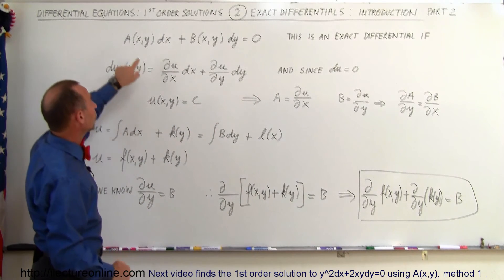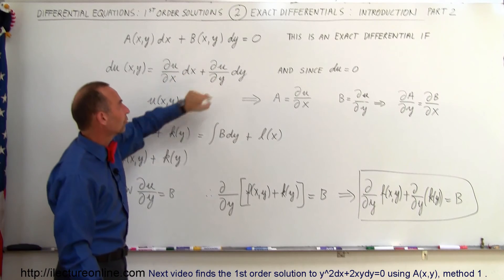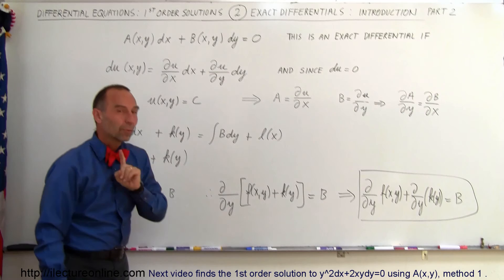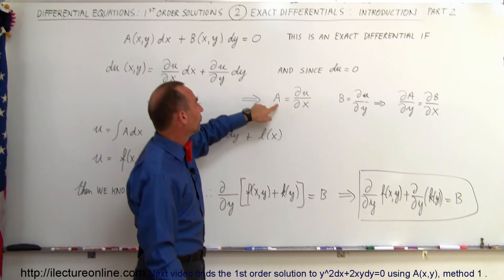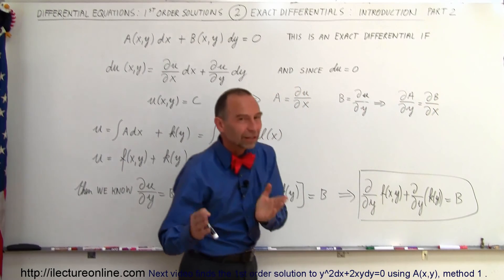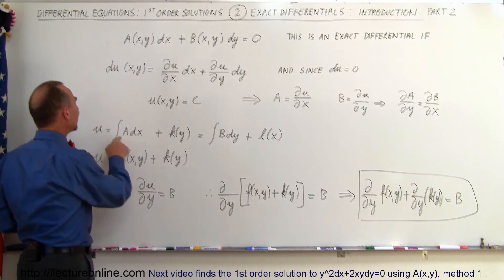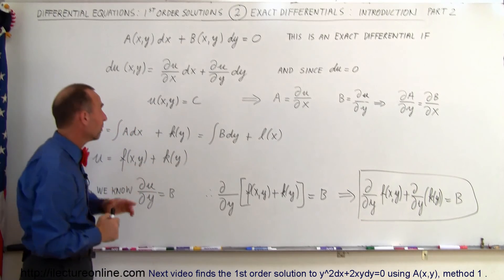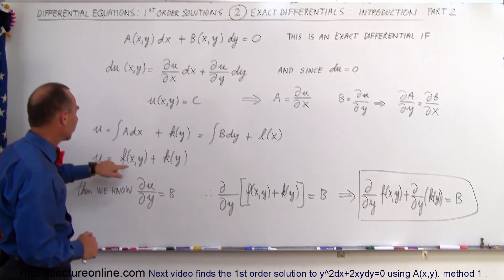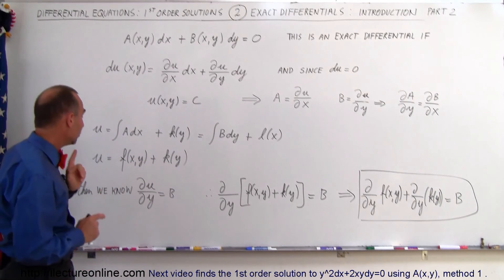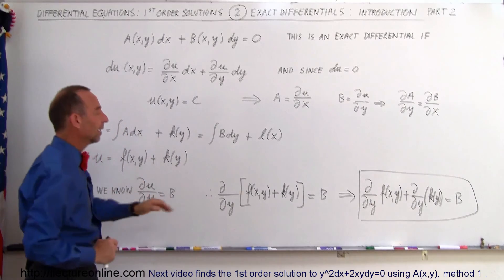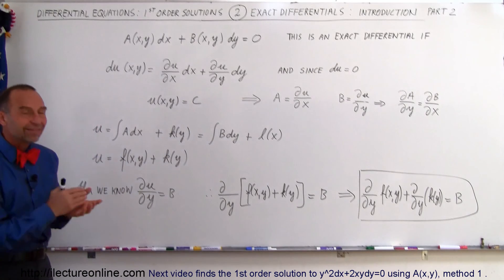So again, if this is an exact differential, we know that a and b can be expressed as the partial of u with respect to x and the partial of u with respect to y. Since the equation equals zero, u equals zero and therefore u equals a constant. We verify exactness by checking that the partial of a with respect to y equals the partial of b with respect to x. Then we take u to be the integral of a dx or the integral of b dy, add a function of y or x accordingly, and set the partial of u with respect to y equal to b to solve for the unknown function.